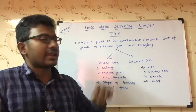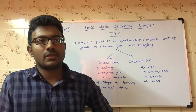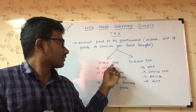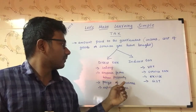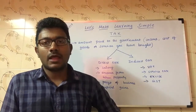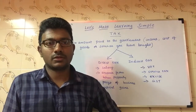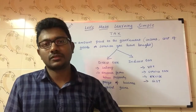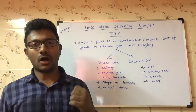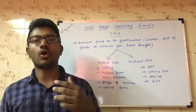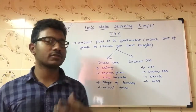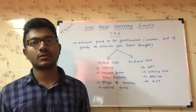Whatever we pay to the government via our salary is direct tax. Income from house property also falls under direct tax — for example, if you own a house and you are getting rent or a lease amount for that house, you need to pay some part of that amount to the government as tax.